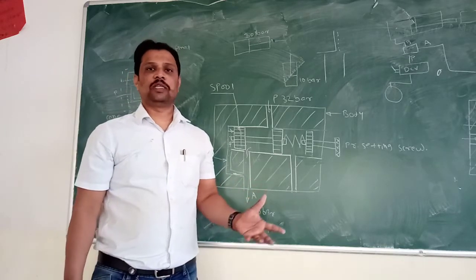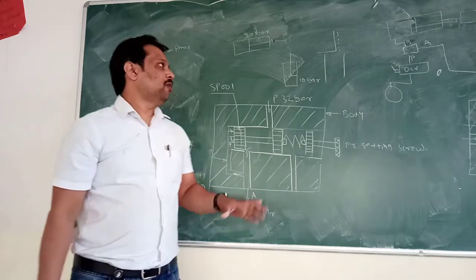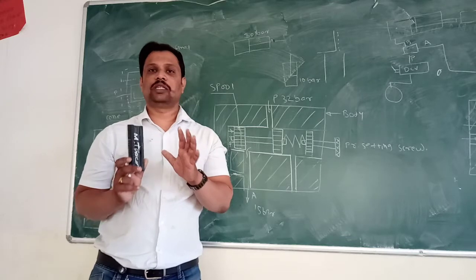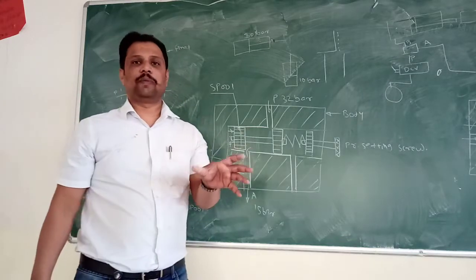Basically, a reducing valve in a hydraulic system is needed when your prime mover is operating under such a condition that your prime mover is generating 30 bar pressure.